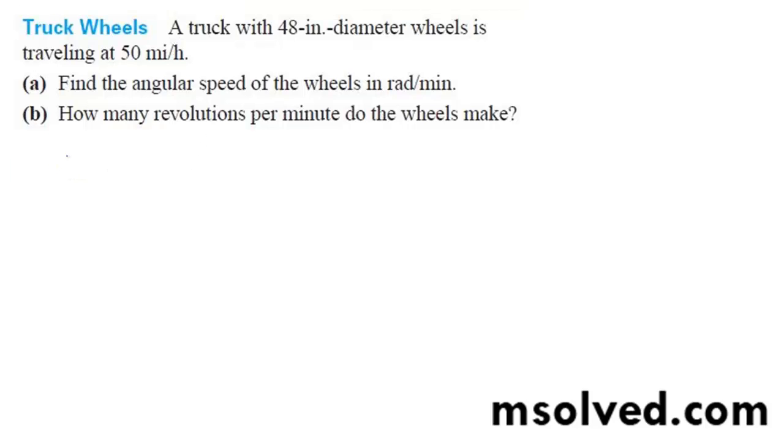So starting off here, 50 miles an hour, this is equal to radians a minute. So 50 times 5,280 feet, that's how many feet it's traveling per hour. But then you divide this through by 60, and then you also divide this through by one half.